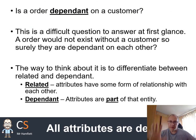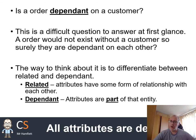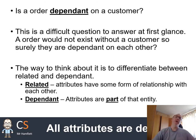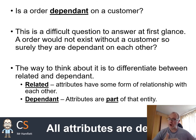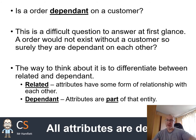Is an order dependent on the customer? That's the problem we're trying to address. An order and a customer are different things — an order is made by a customer, but an order does not define a customer. An order wouldn't exist without a customer, but they are not dependent on each other. So ask yourself: are the two things related, or is one actually part of the other entity?